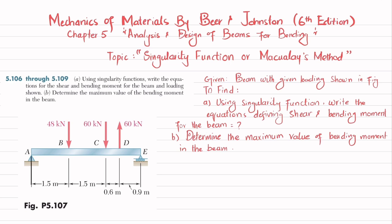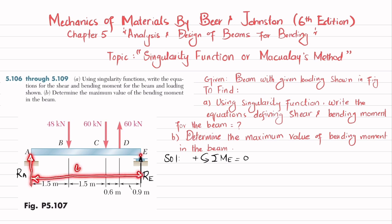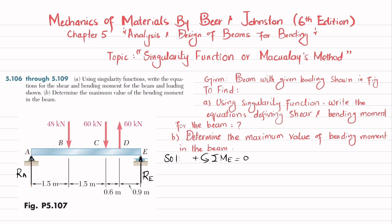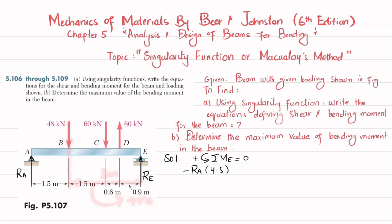Let's start with the solution. The first step is to remove the pin support at point A, giving a reaction force R_A, and remove the roller support at point E, giving reaction force R_E. We'll find R_A and R_E using equations of equilibrium. The first equation: sum of all moments about point E equals zero, taking counterclockwise moments as positive. The moment due to R_A — its perpendicular distance is 4.5 meters — produces a clockwise moment, so it is negative: minus R_A times 4.5.